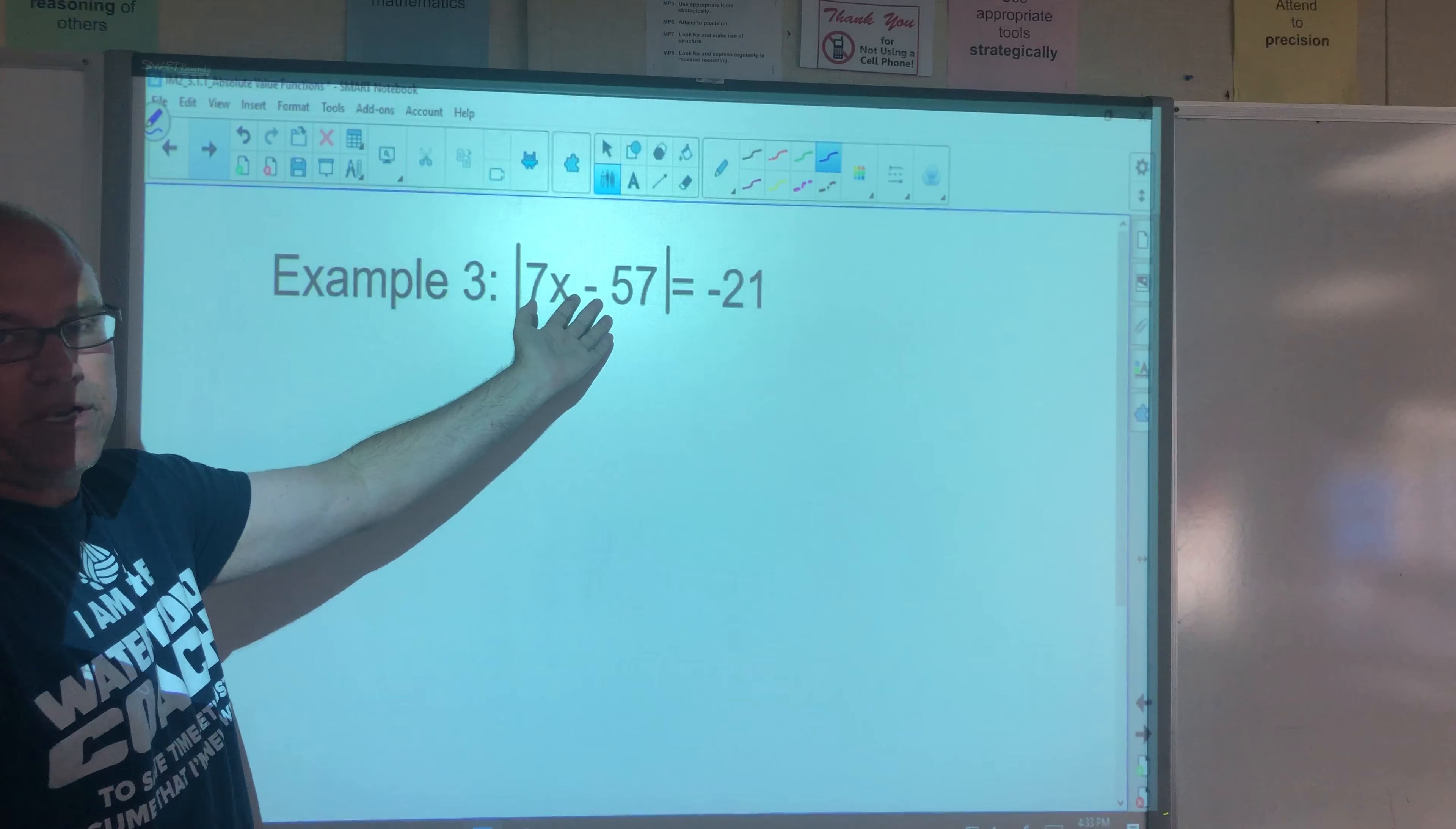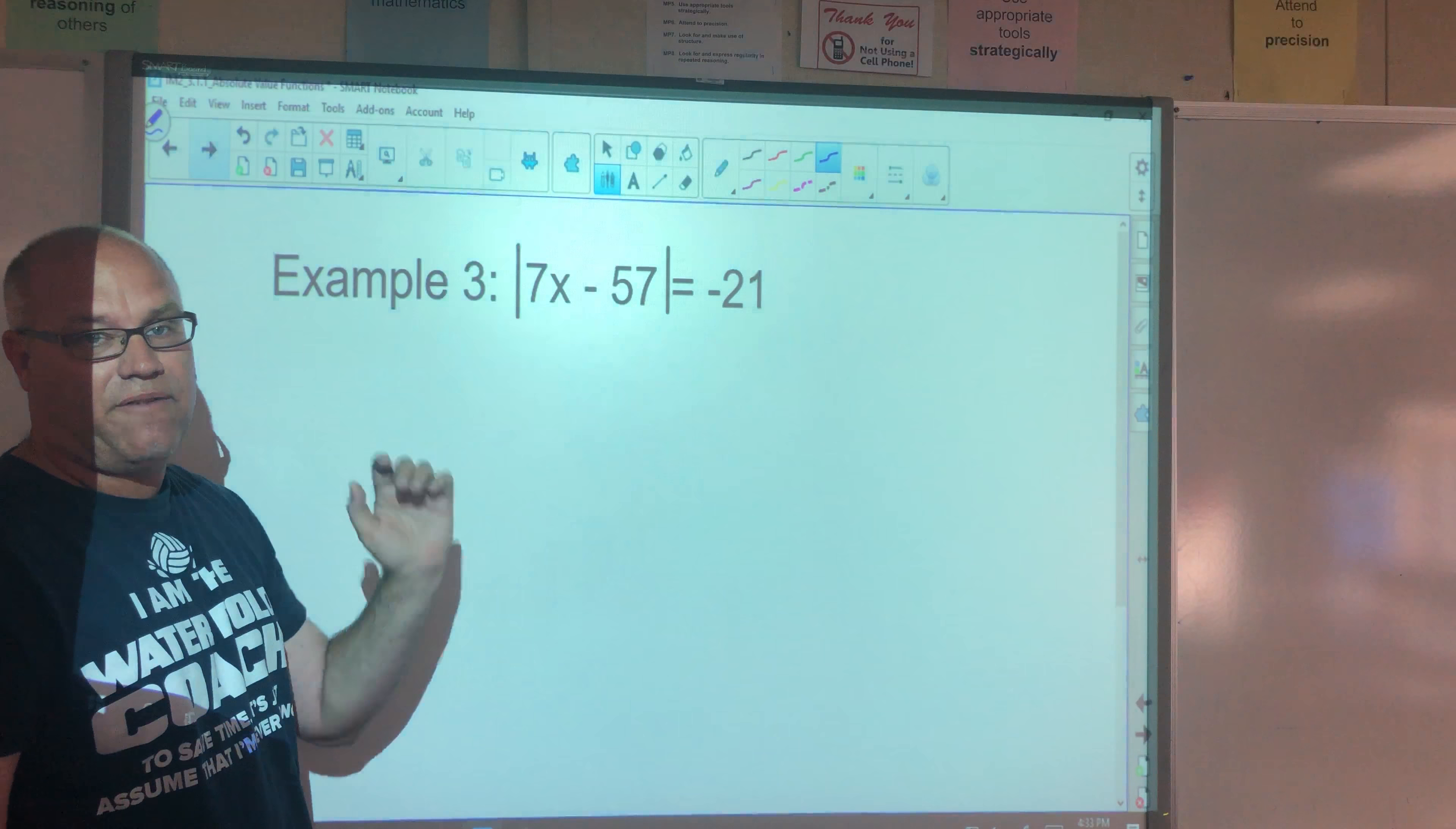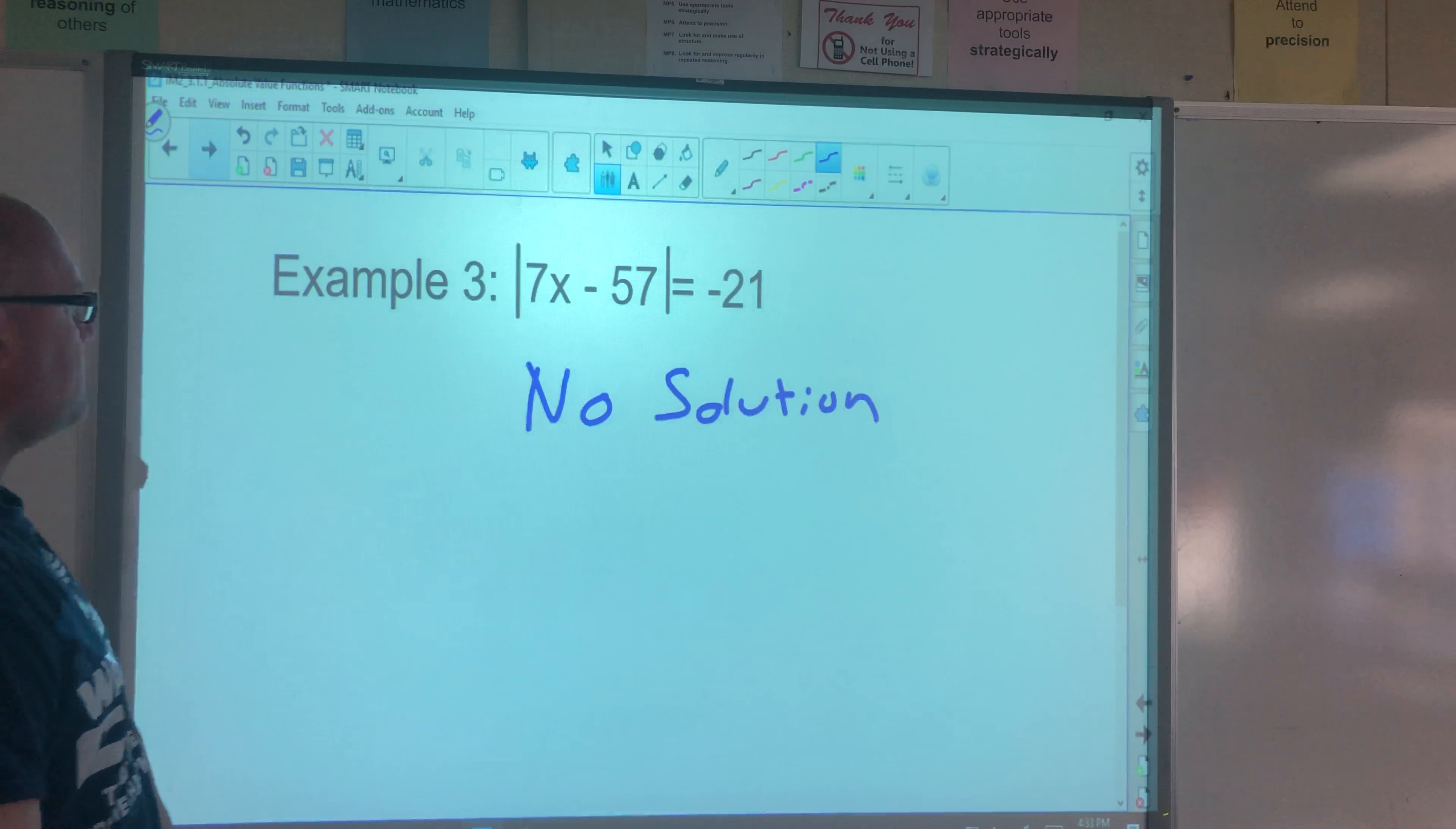Because if you have negative 21 in here, the absolute value of that is 21, right? There's no way to get a negative value. So this would be an example of no solution.